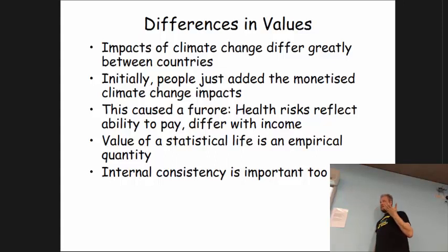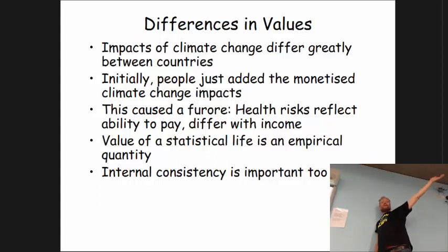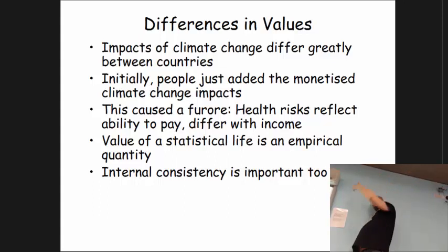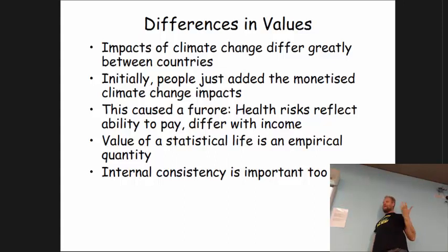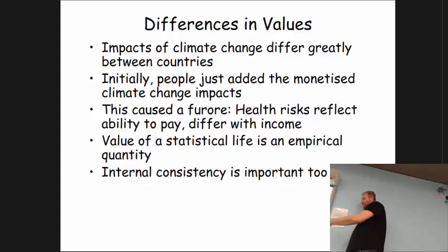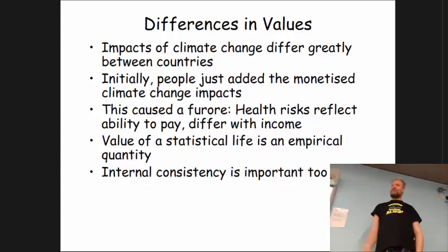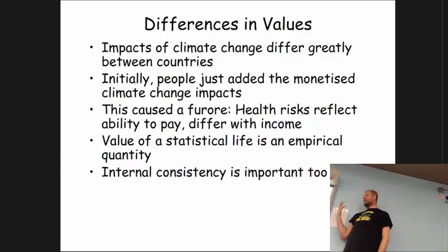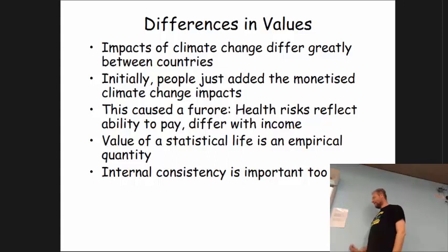Similarly for the Bangladeshi government: avoiding a death via a local roundabout is worth only £70,000, but via a global greenhouse gas reduction project it's worth £1 million. The recommendation would be: Bangladesh, put all your money into greenhouse gas emission reduction and forget about road safety. That cannot be the right recommendation. For reasons of internal consistency, you can't say a death avoided through a global project is worth more or less than one avoided through a local project.